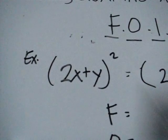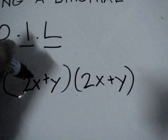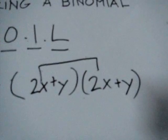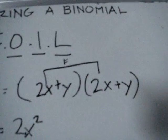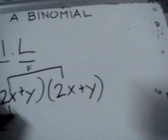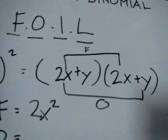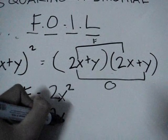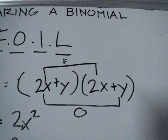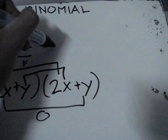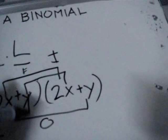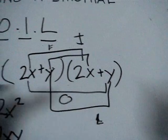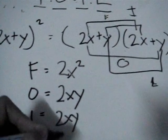For example, squaring the expression 2x plus y. The first terms are 2x and 2x, which gives 2x squared. The outer term is 2x and y, which is equal to 2xy. The last terms are y and y, which equals y squared.